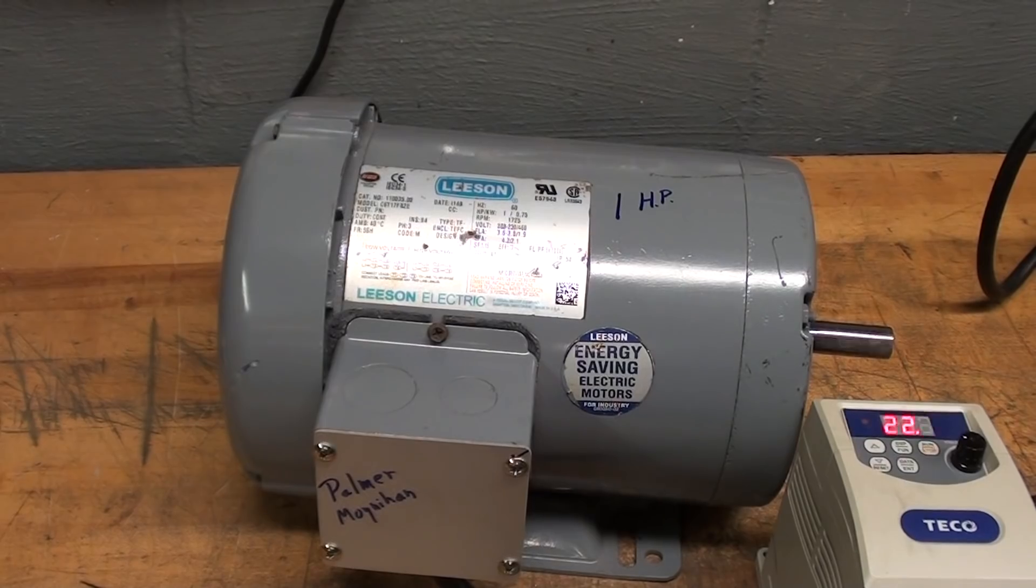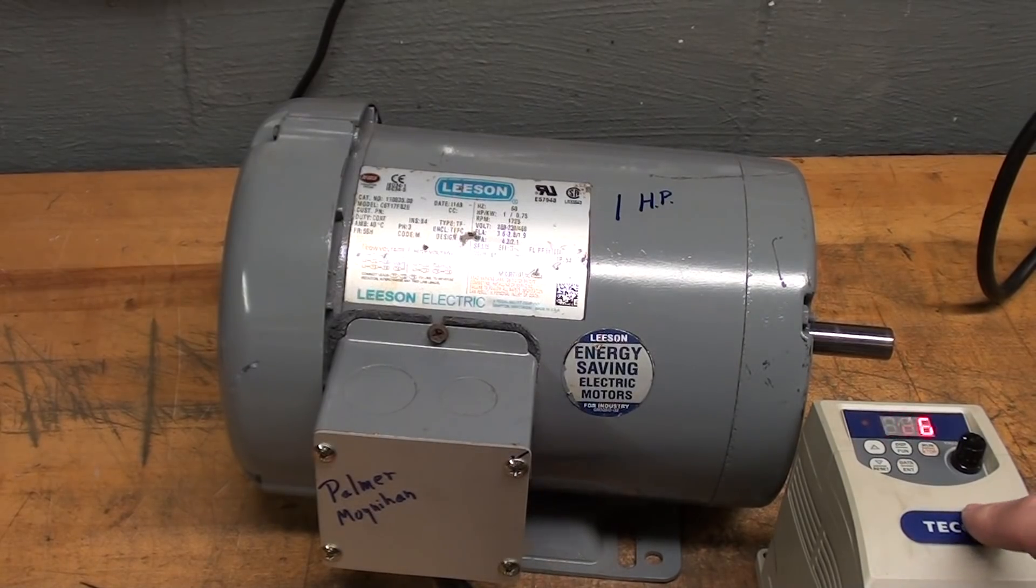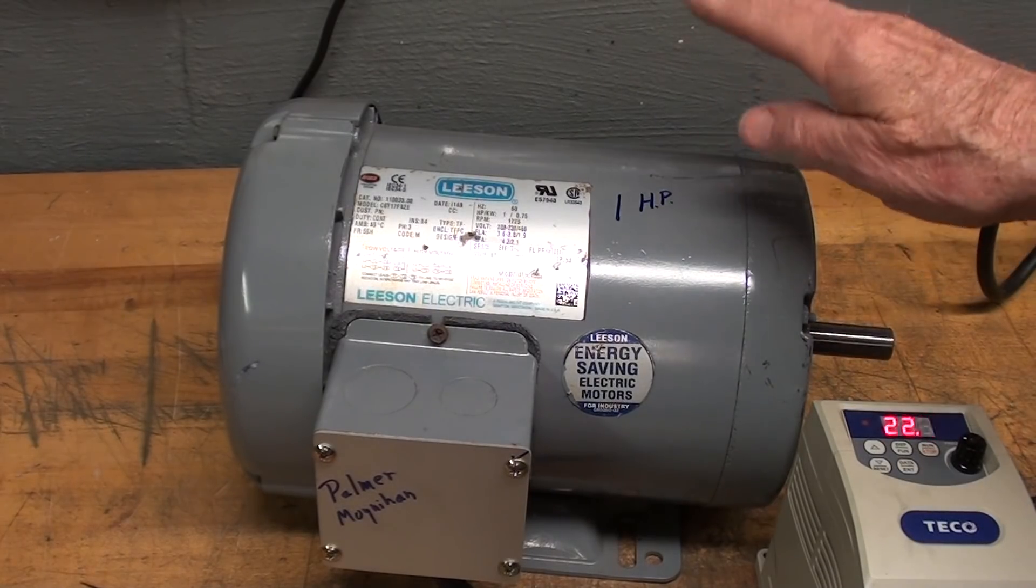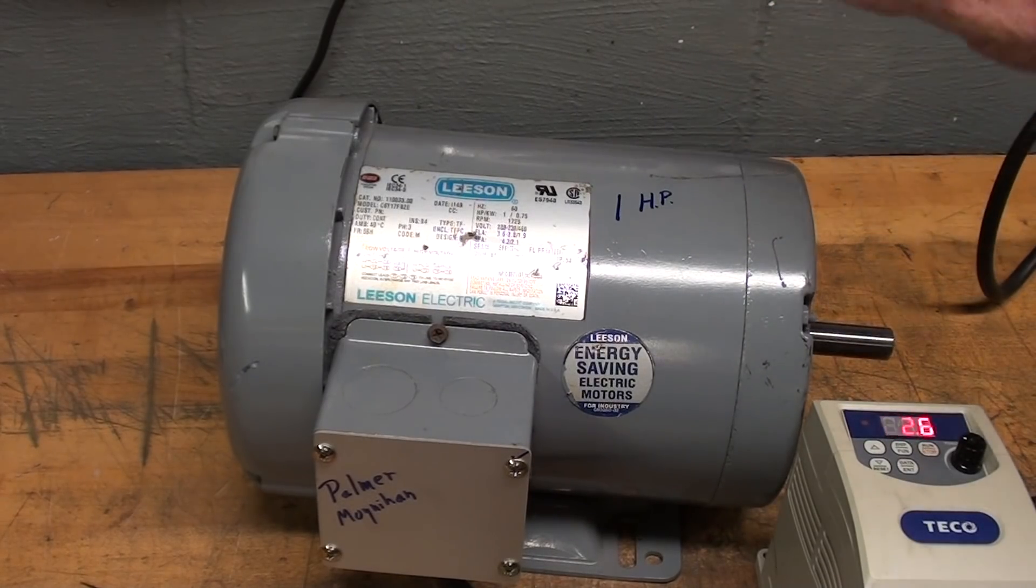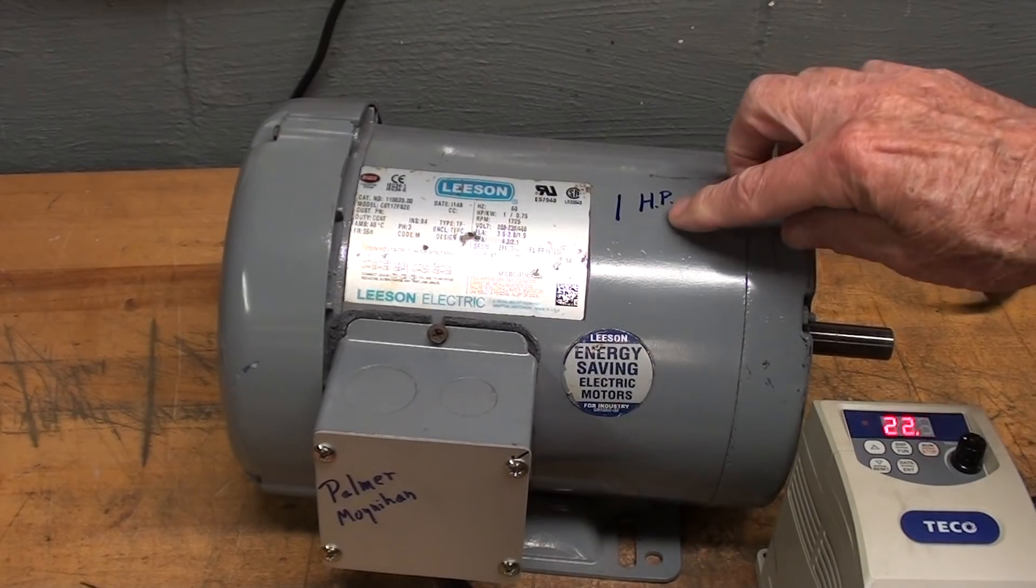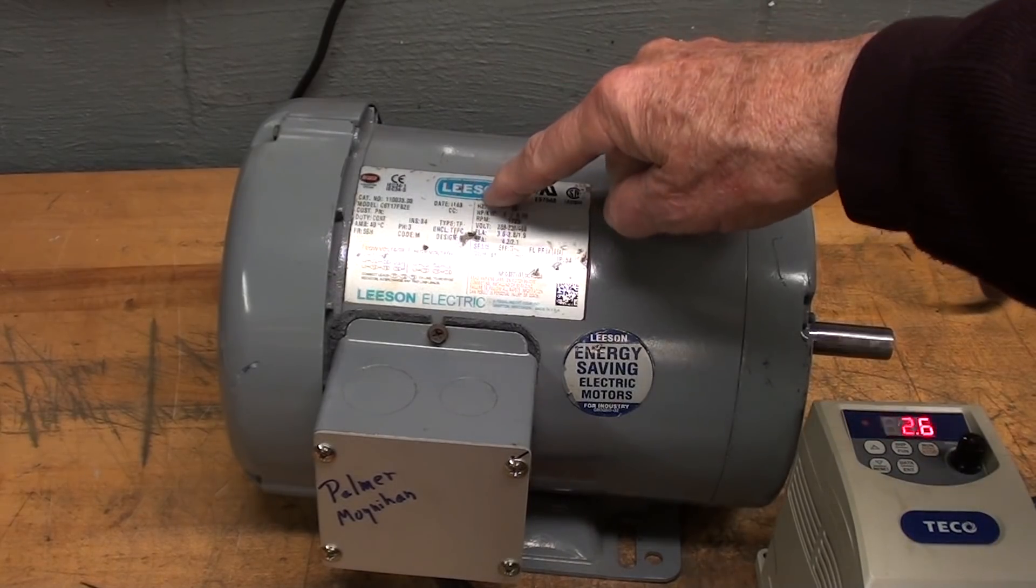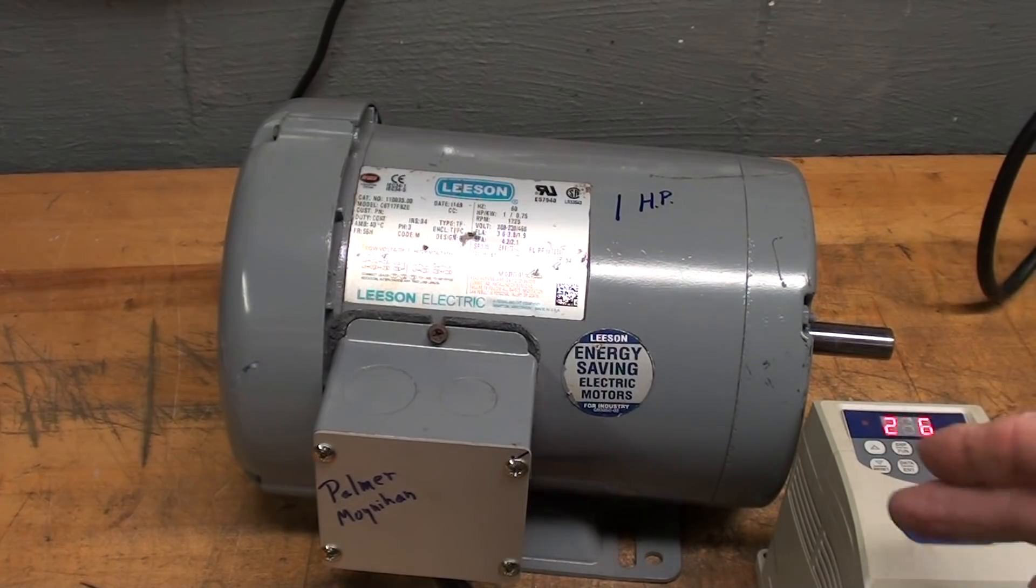This is the motor and controller, the VFD, that I am going to use. This I already had, but Palmer Moynihan gave me the motor, or traded me, I forgot which. It's a one horse, three phase Leeson motor with a 5/8 inch shaft. He wired it for me so it's ready to go.